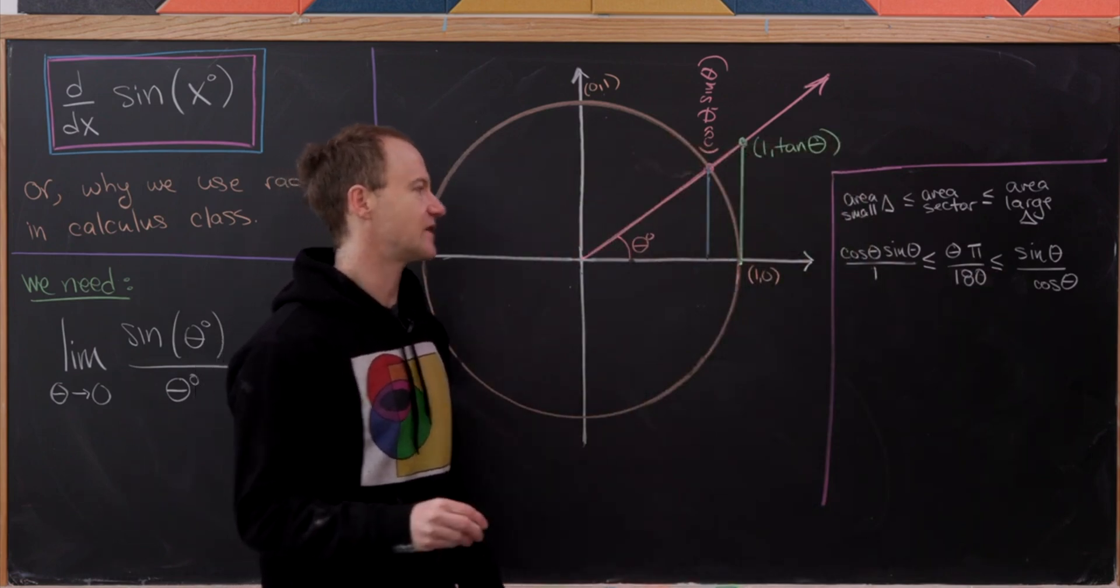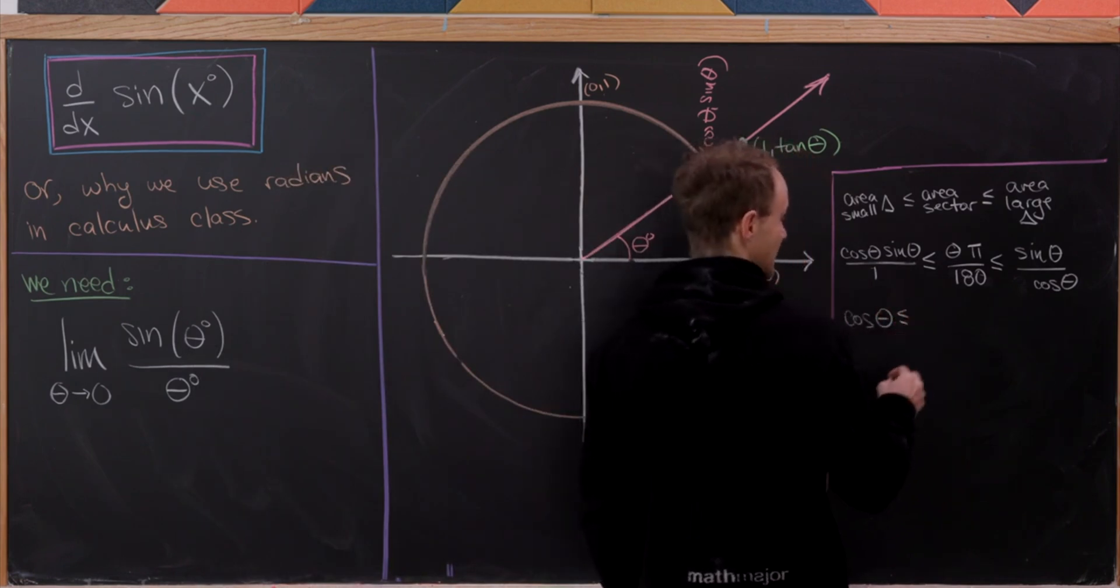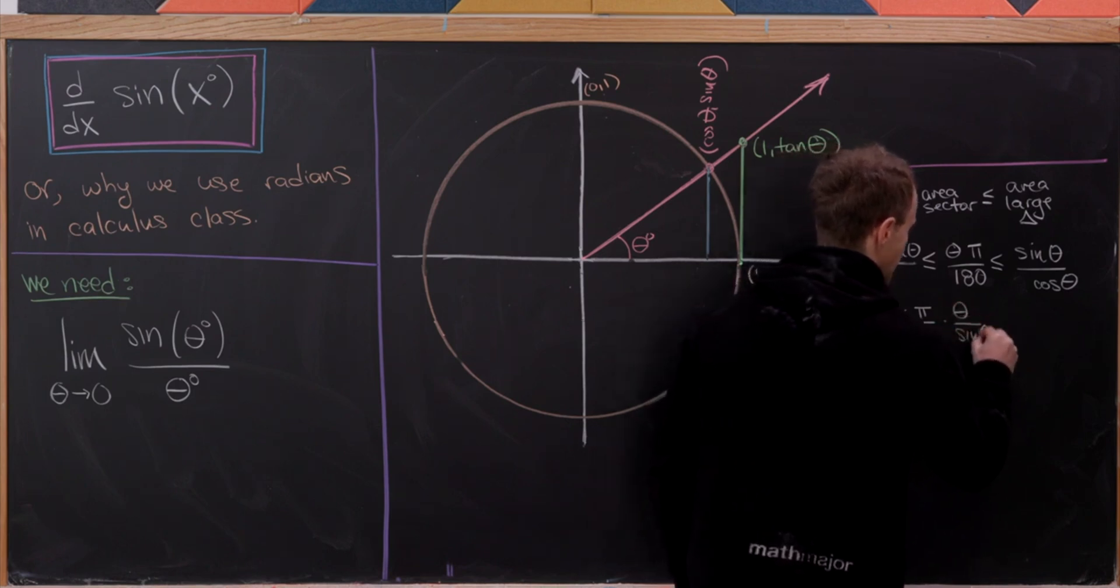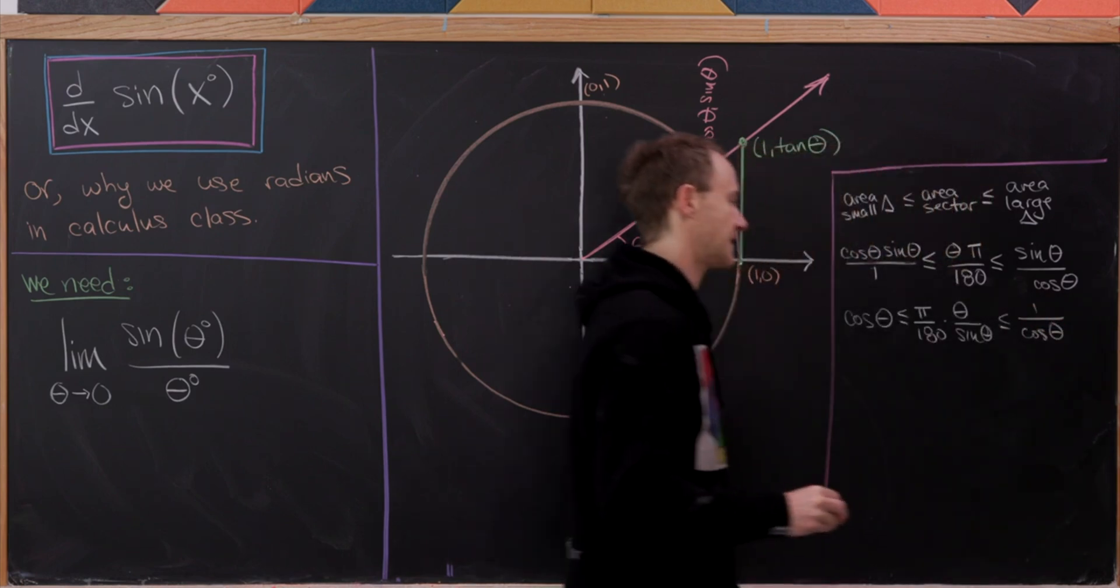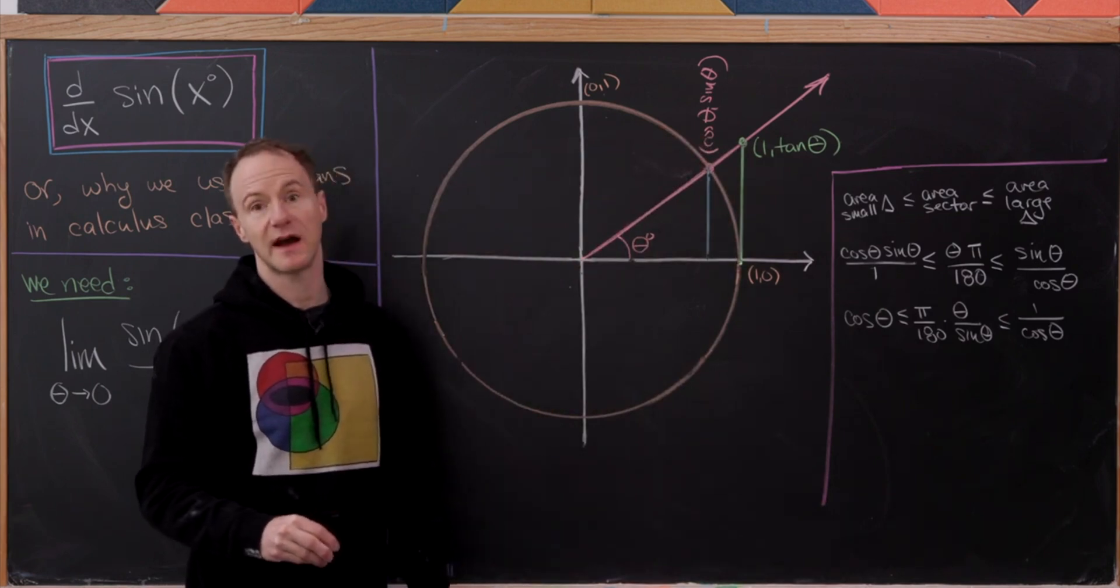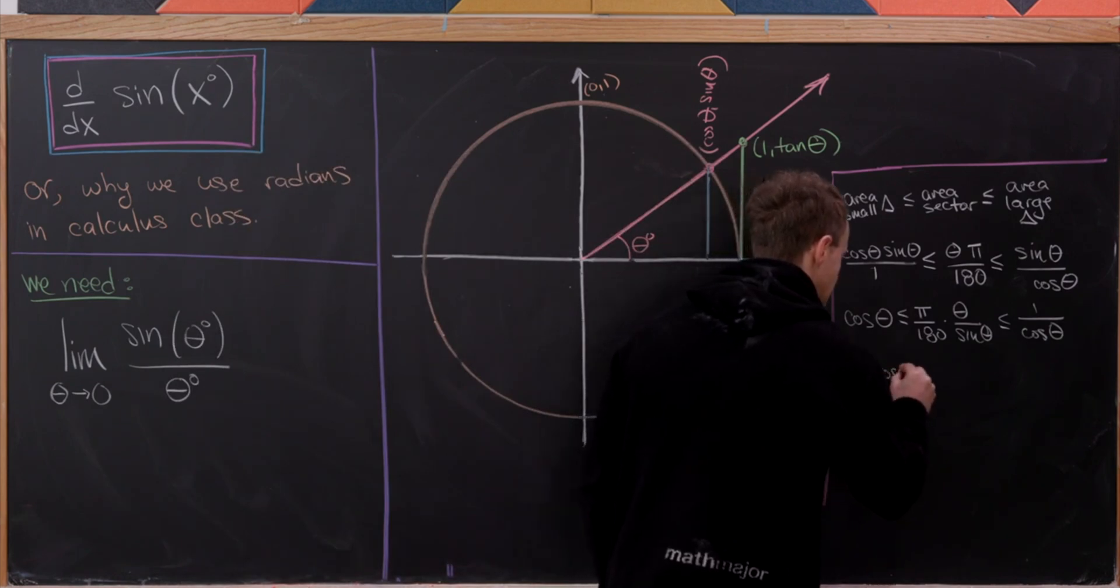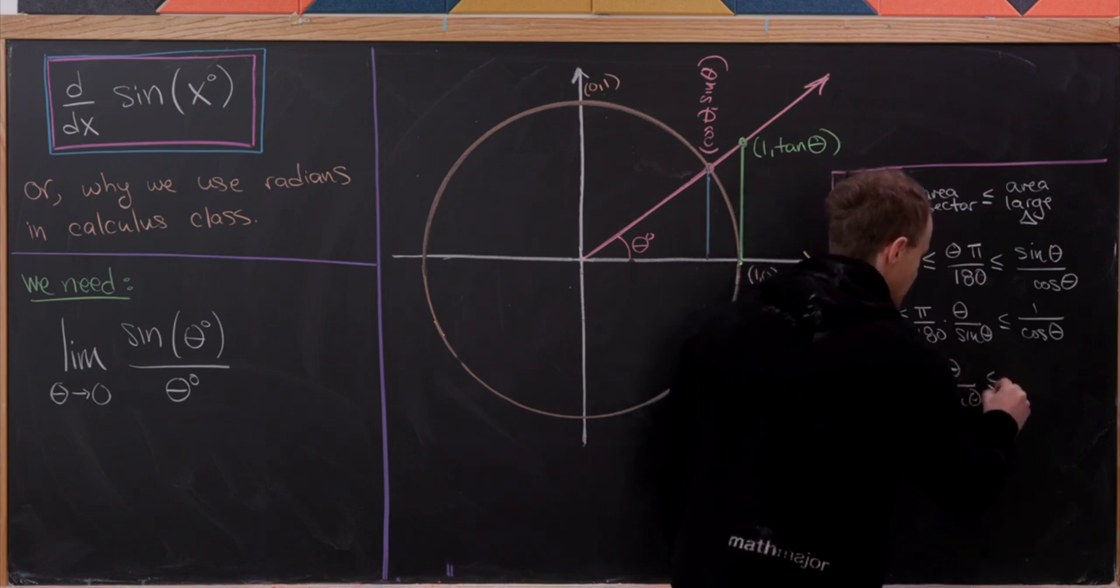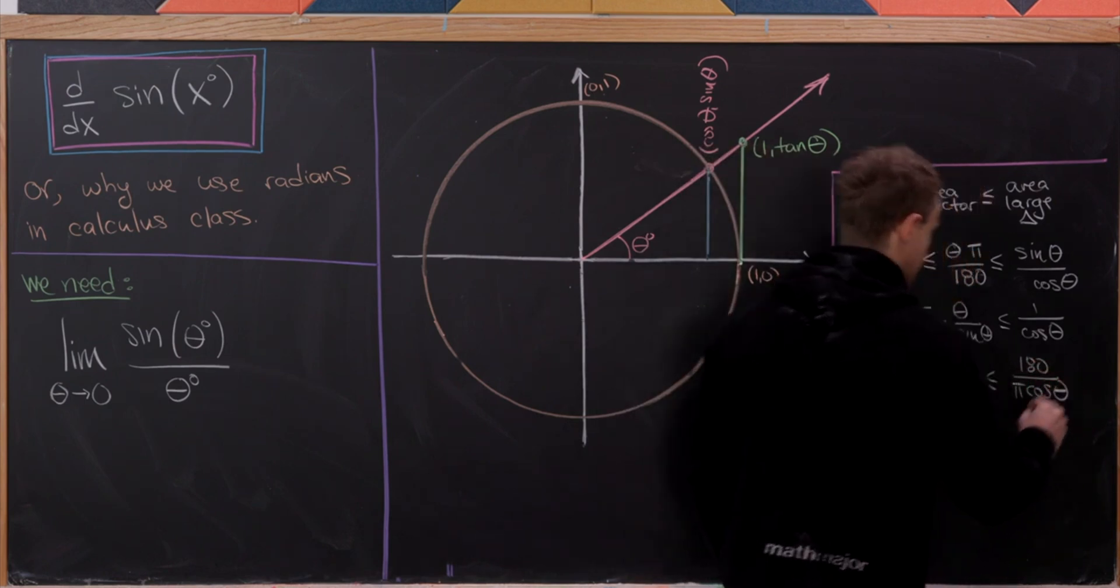Next up I'm going to divide everything by sine theta. So that's going to give me cosine theta is less than or equal to pi over 180 times theta over sine theta, which is in turn less than or equal to 1 over cosine theta. So I'll multiply this whole thing by 180 over pi. That gives 180 over pi times cosine theta is less than or equal to theta over sine theta, which in turn is less than or equal to 180 over pi times cosine theta.